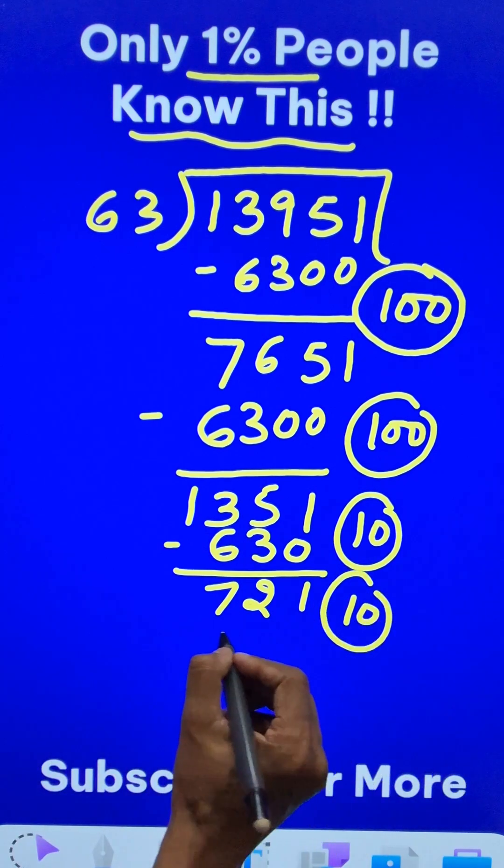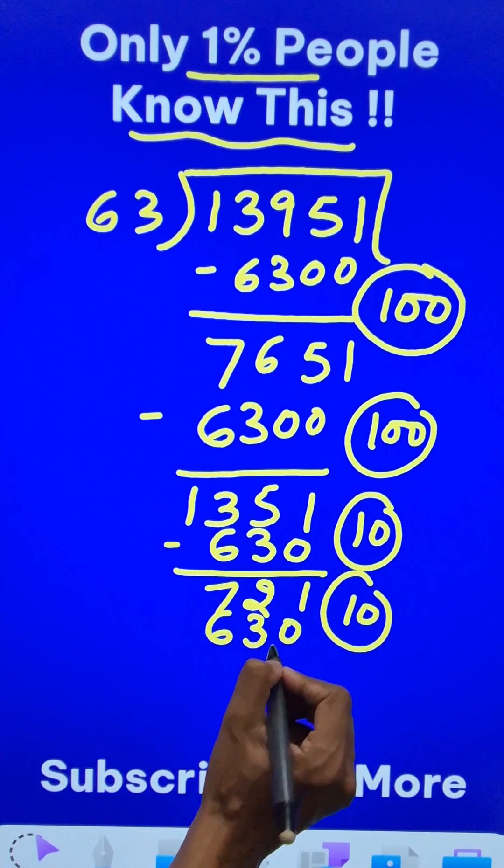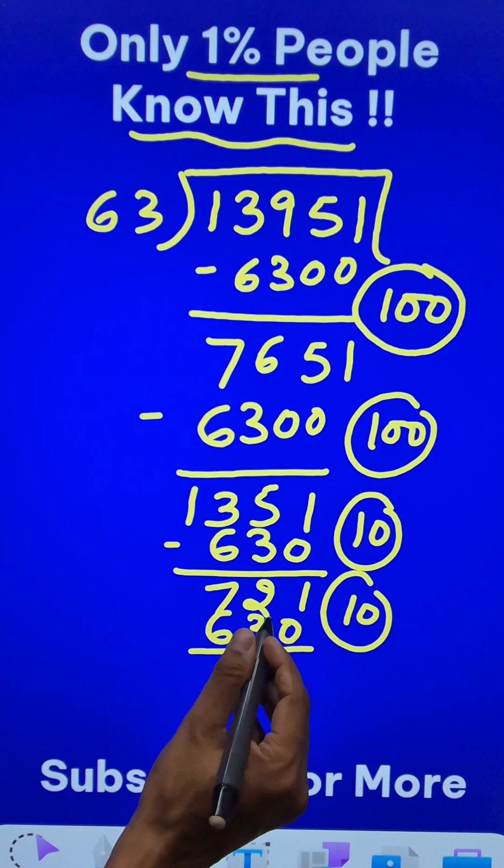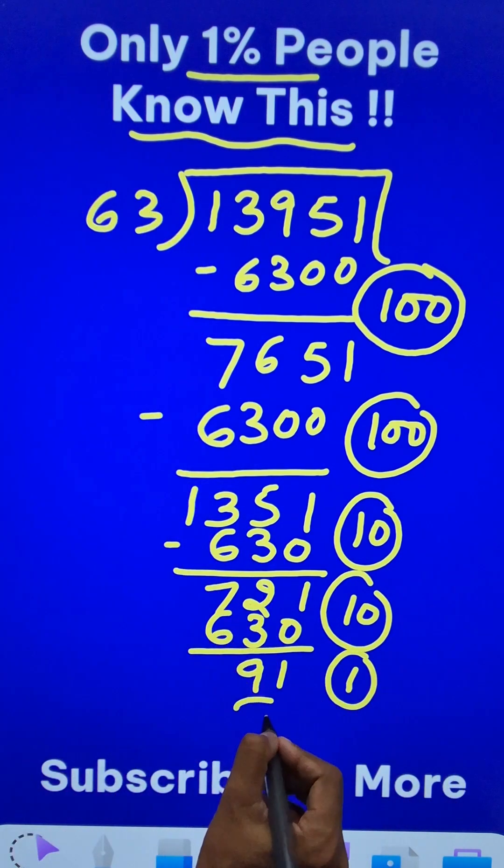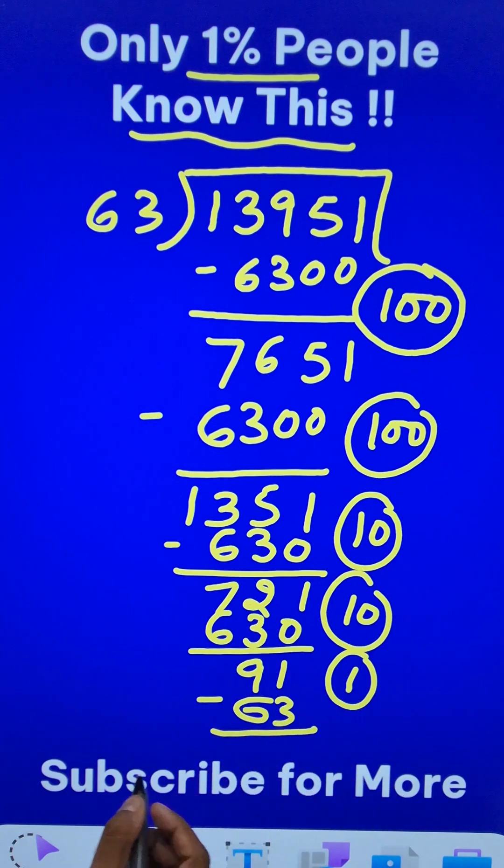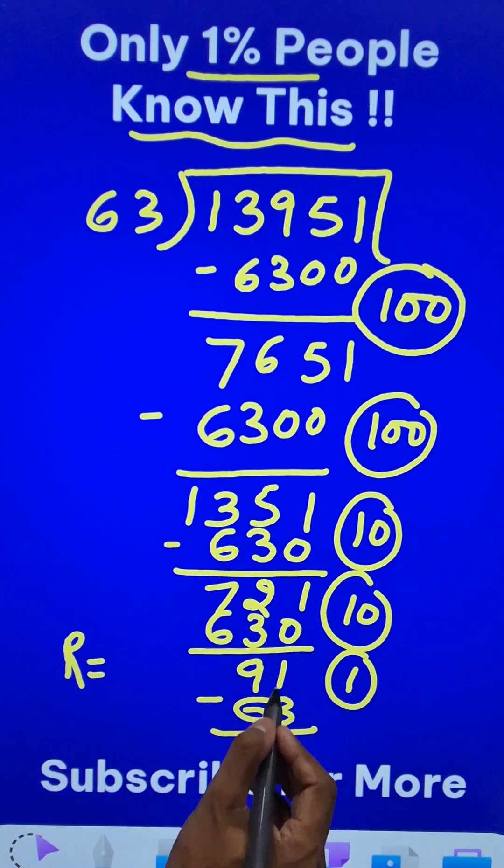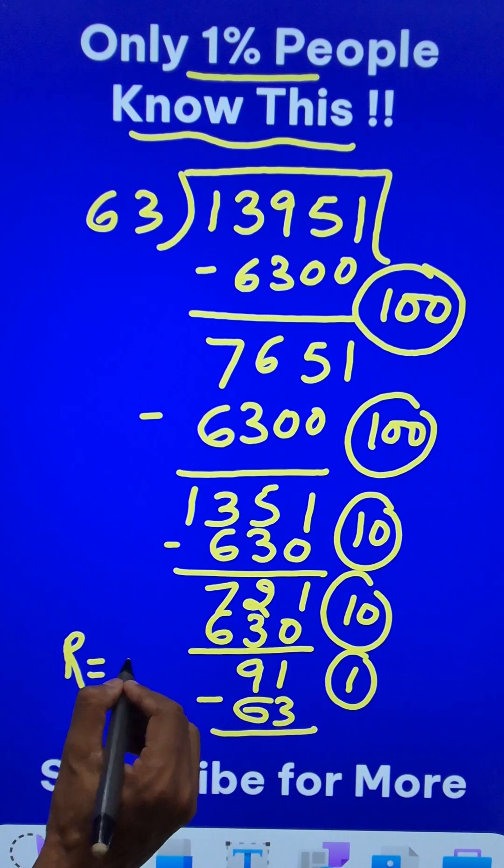Another 10 times gives me 630 and that gives me the difference as 91. So, it is 1 times 63 and finally the remainder for the question will be the difference of these two, that is 28.